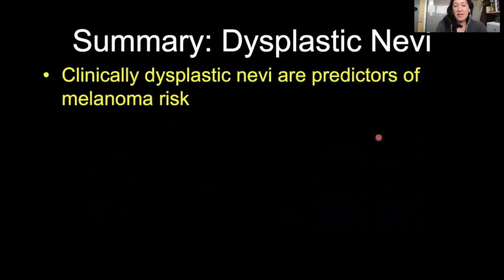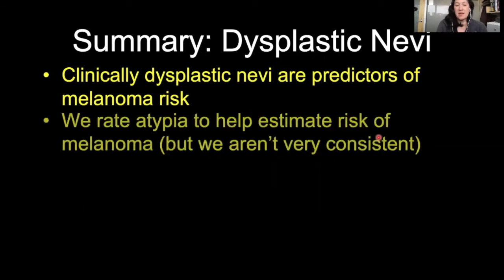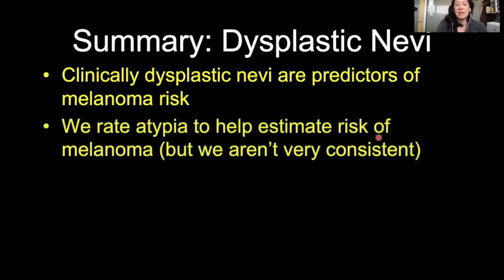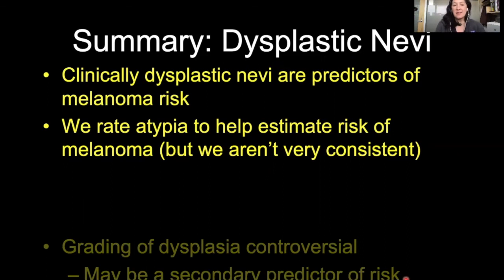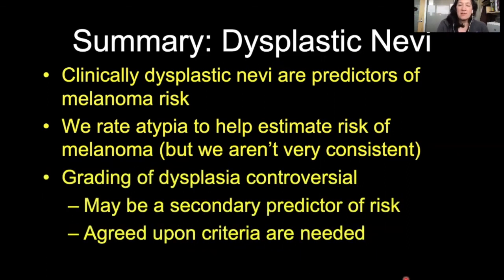To sum it up, clinically dysplastic nevi are predictors of melanoma risk — that's why they get biopsied, and our job is to tell people it's not melanoma. We rate atypia to help estimate the risk of melanoma, but we're not very consistent. Do your best. The grading of dysplasia in itself is controversial — it may be a secondary predictor of risk, but we need to agree upon better criteria. Thanks for your attention.